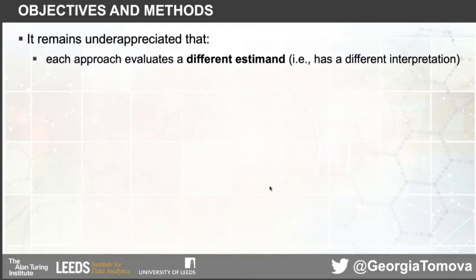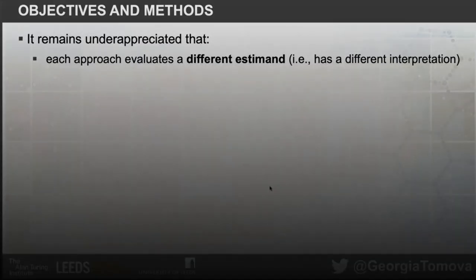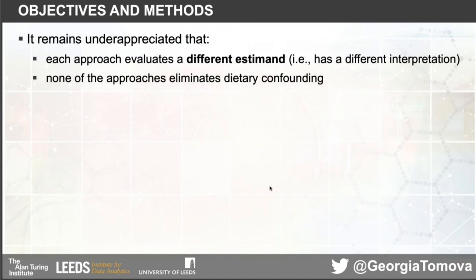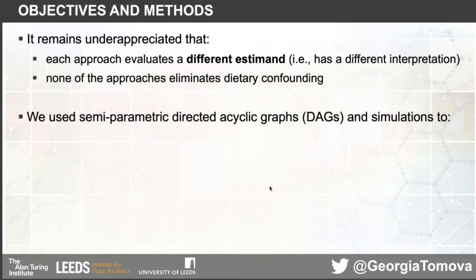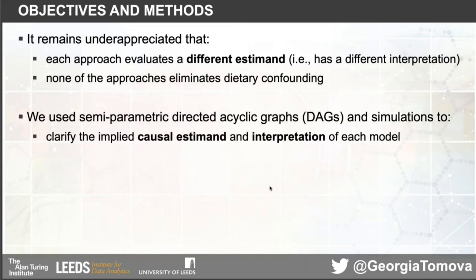There are a few issues that remain underappreciated. First, each approach evaluates a different estimand — that is, what it is we're actually estimating, such as a total causal effect or a relative effect — and as a result each approach has a different interpretation. Secondly, when we use energy intake to reduce dietary confounding, none of these approaches actually eliminates that confounding.